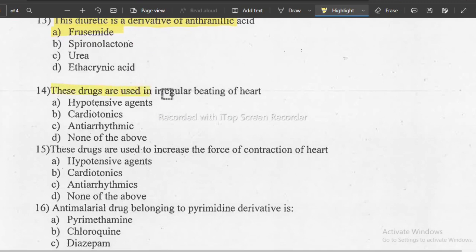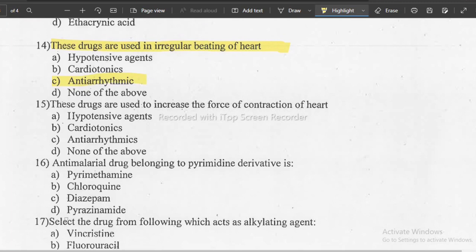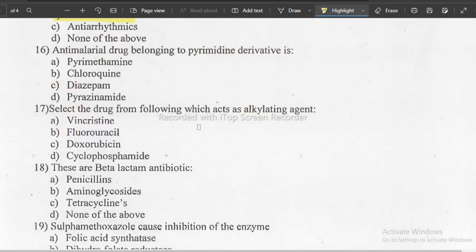Question 14: these drugs are useful in irregular heartbeat. If there is irregular heartbeat, which drug do we use? Answer is C, anti-arrhythmia or anti-arrhythmic. Next question 15: these drugs are used to increase the force of contraction of heart. Which drug to use for contraction of heart? The correct answer is cardiotonic.